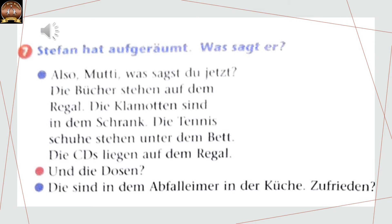Now let us come back to our course book. Übung sieben. Till now everything was accusative. Now we are coming to dative. Till now we were using the verbs stellen, legen, hängen, kommen — so we were using accusative after the preposition. Now we will be using the verbs sein, stehen, legen, hängen — so we will be using dative after the preposition.